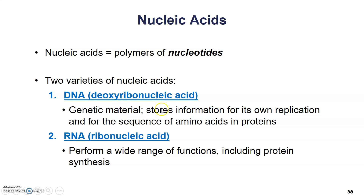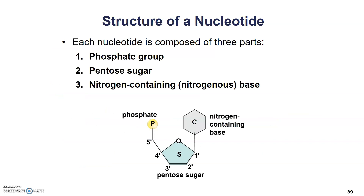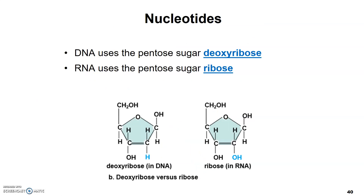Both DNA and RNA, even though they're slightly different, are made up of nucleotides. Each nucleotide is composed of three parts: a phosphate group, shown here in yellow; a pentose or five-carbon sugar, shown here in teal; and a nitrogenous base, shown here in gray. There are some slight differences in the nucleotides of DNA and RNA, mainly in which type of sugar they have. A DNA nucleotide uses a pentose sugar called deoxyribose, whereas RNA uses the sugar called ribose.